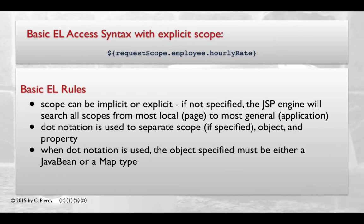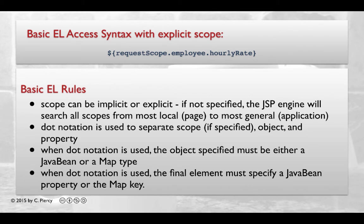When dot notation is used, the object specified must be either a JavaBean or a map type. When dot notation is used, the final element must specify a JavaBean property or the map key.